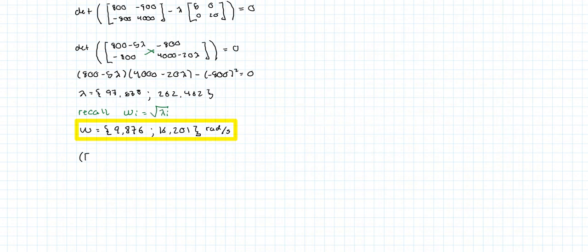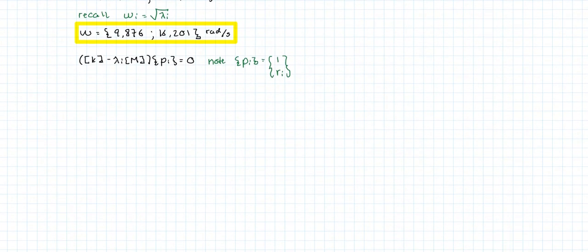Now the mode shapes. So we have the stiffness matrix minus lambda sub i times the mass matrix, all that multiplied by p sub i, or the i-th eigenvector, is equal to zero. So I'm just going to put a note. We're going to use the eigenvectors with the following form [1, r sub i]. I think it's called normalized.